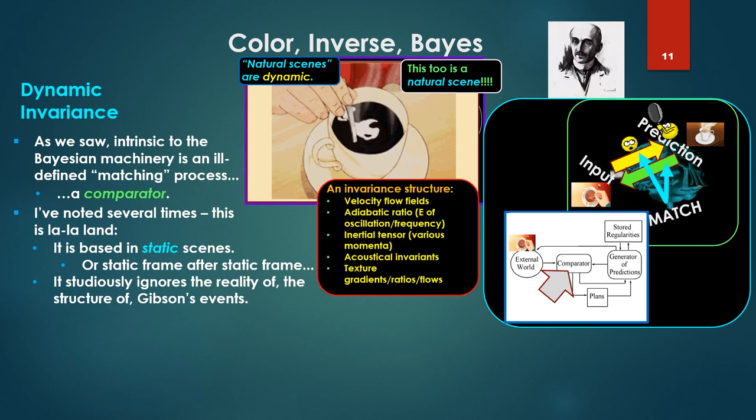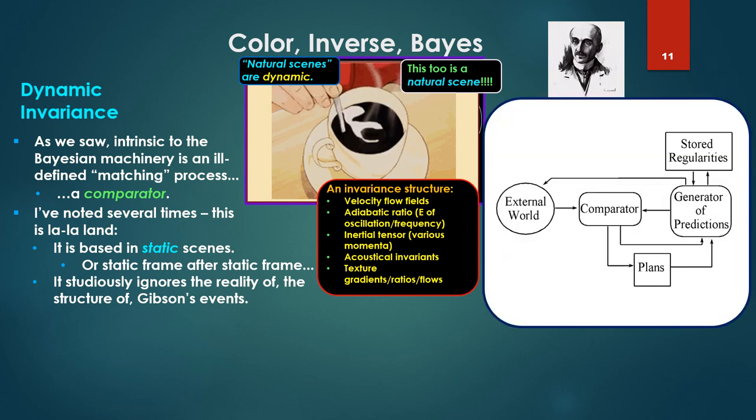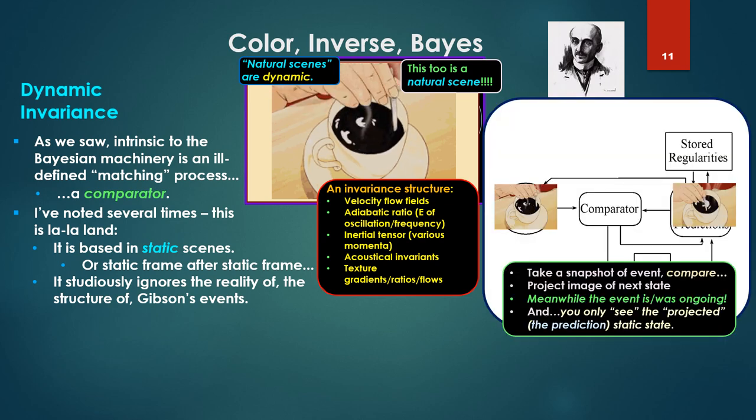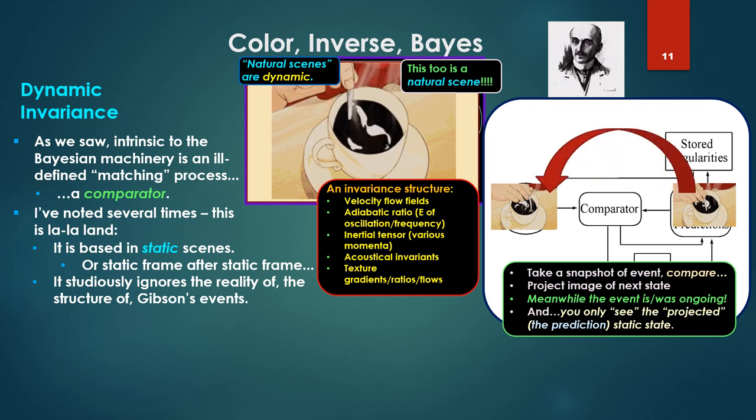The event literally has to be stopped frame after frame after frame, somehow synced. It studiously ignores the reality of the structure of Gibson's events. Now this too is a natural scene, a coffee stirring, with that invariance structure. Velocity flow fields, tau ratios. It is a ratio over time of energy of oscillation to frequency of oscillation. Inertial tensors, various phenomena, acoustical invariance, all that. So when we look at the comparator, what we see, we're taking a snapshot of that event. Take our snapshot and then compare. Then project the image of the next state.